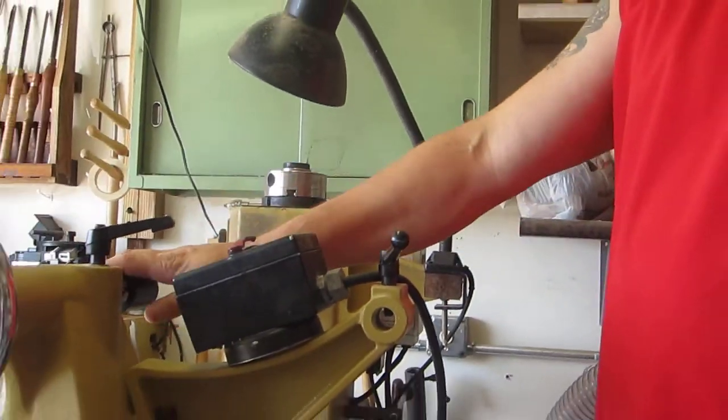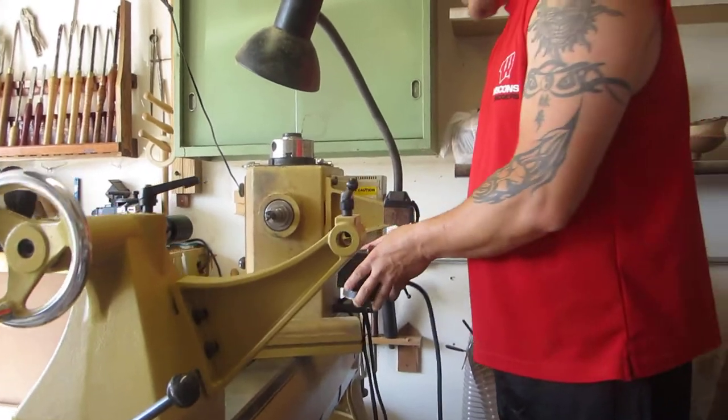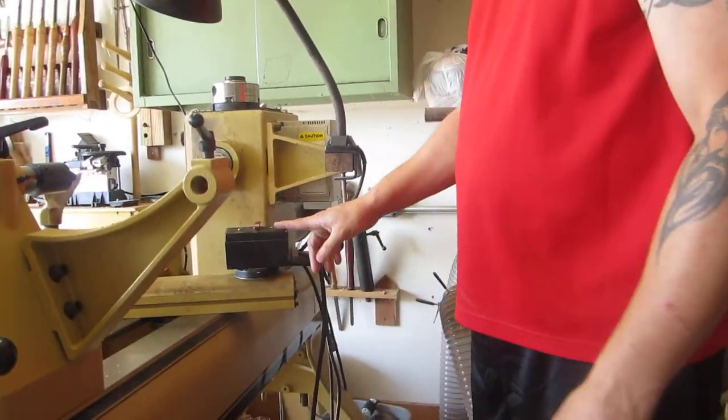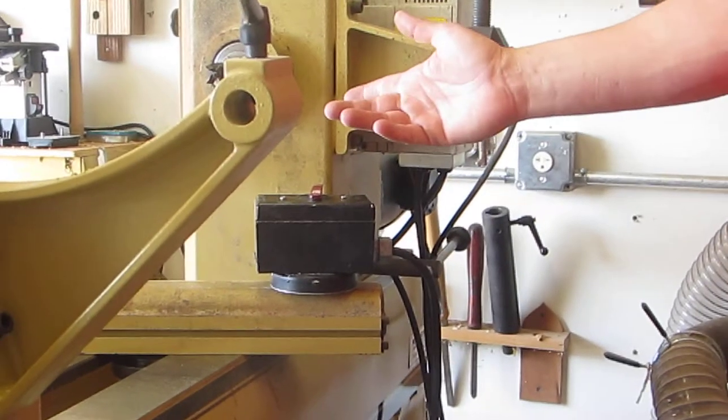So I keep it right there, usually right on top of my tailstock, or if the situation is right, I'll put it right down there at the end of the banjo here so that I can switch it on and off.